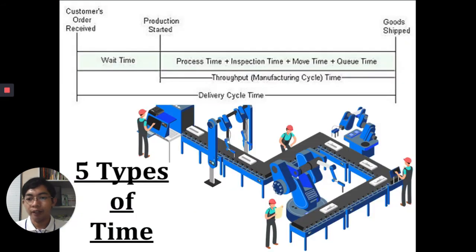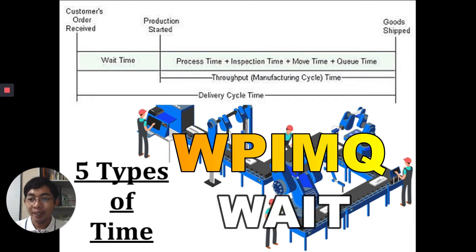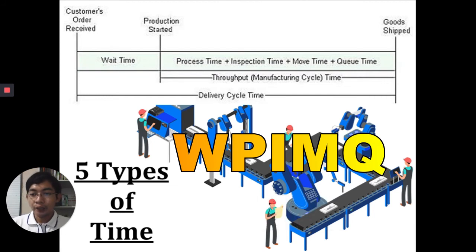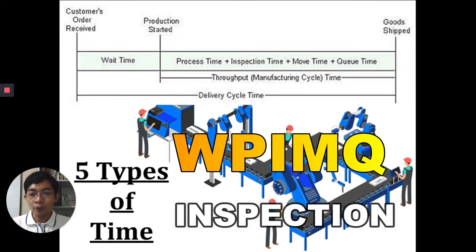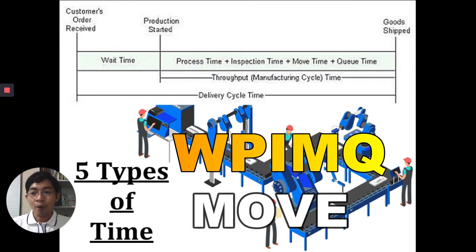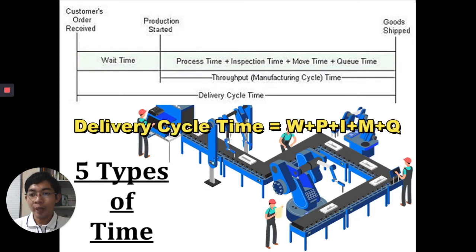Let's go to manufacturing cycle efficiency, or MCE. We will discuss the five types of time using the acronym W-P-I-M-Q. W stands for wait time — the time from the arrival of your goods from your suppliers. P or process time is the time that you convert raw materials into finished goods. I is inspection time — you need to know the conformance of your goods from the specifications. M or move time is the time that you transfer the goods from your warehouse to your store. Lastly, Q or queue time is the time that you transfer goods from your store to your customers.